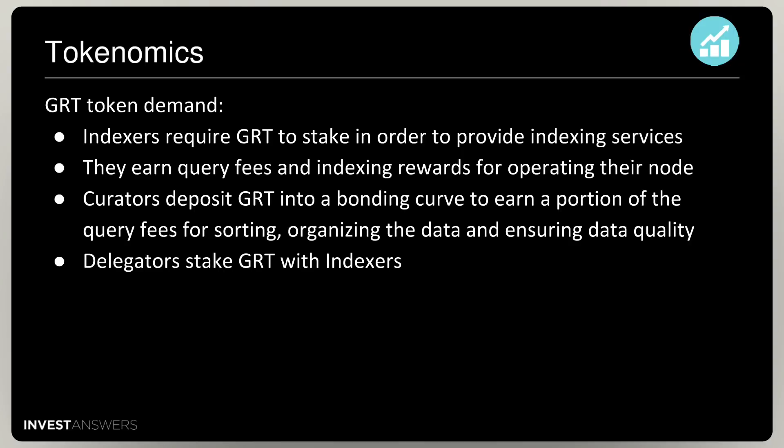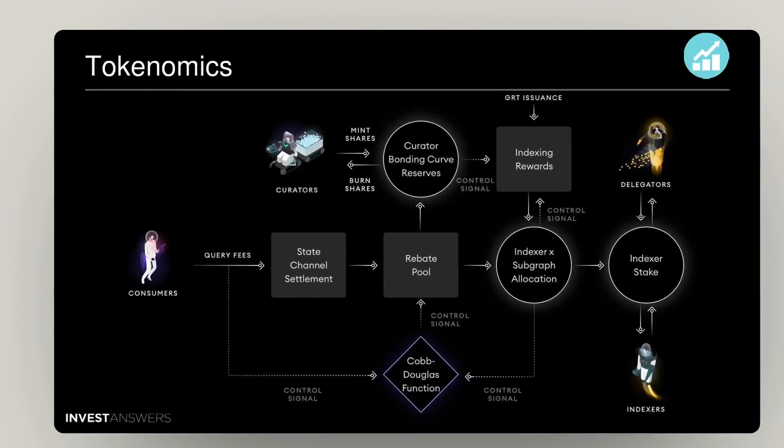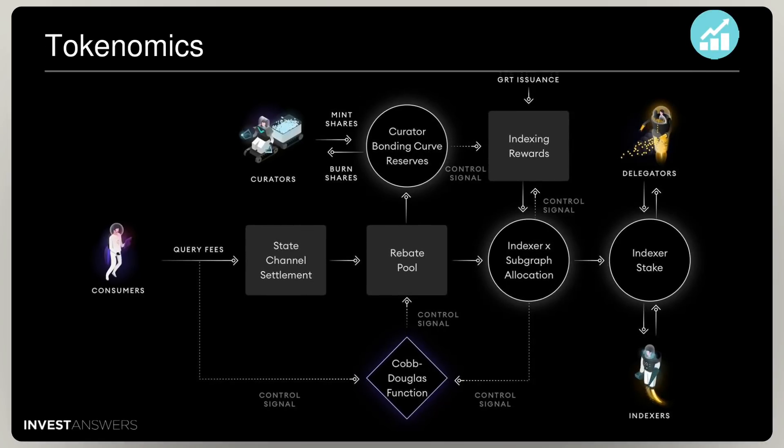Indexers require GRT to stake in order to provide indexing services, and they earn query fees and indexing rewards from operating their node. Curators deposit GRT into a bonding curve to earn a portion of the query fees. Delegators can stake their GRT with indexers to contribute to network security and earn a portion of the fees and rewards. All indexers, delegators, and curators are paid in GRT tokens depending on their performance in how they index the subgraphs.